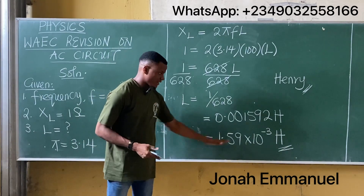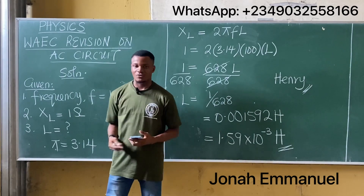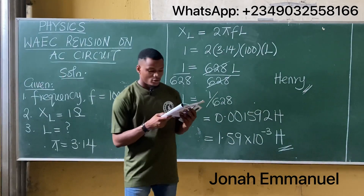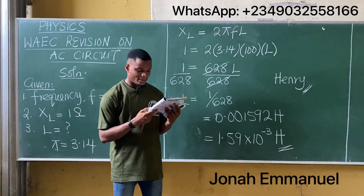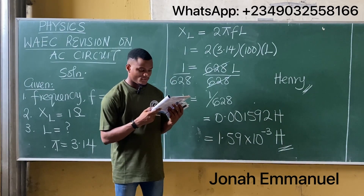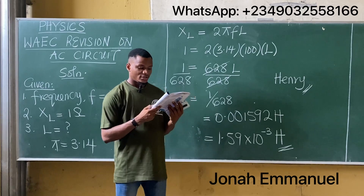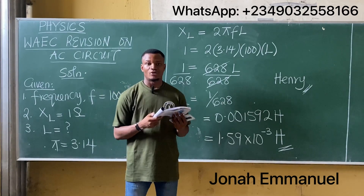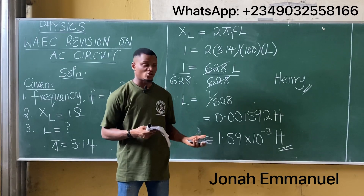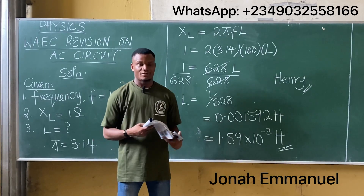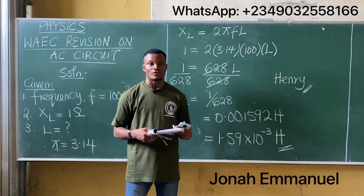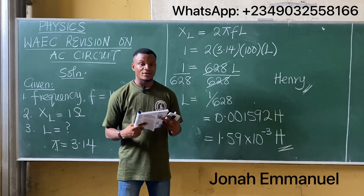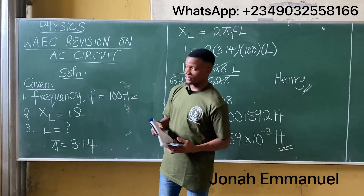Let's check which option matches this. From what I can see, that's option B: 1.59 times 10 to the power minus 3. Note it should be henry (H), not newton (N). That's how you solve this question. Let's take another question — still on WAEC — to revise AC circuits.